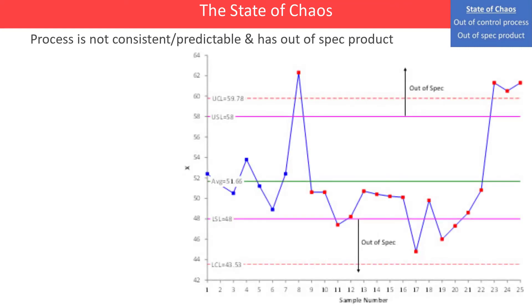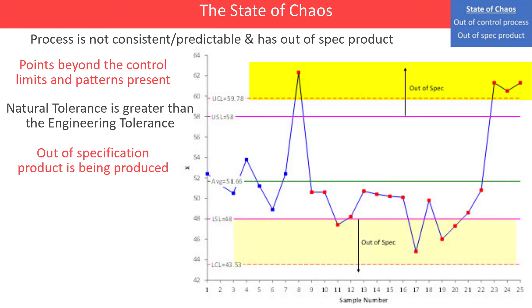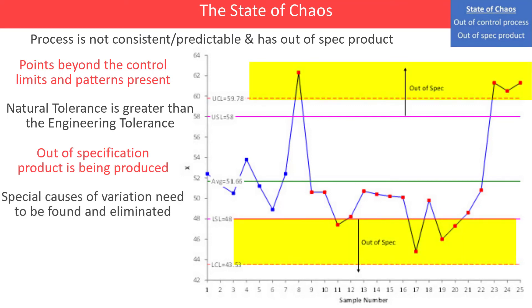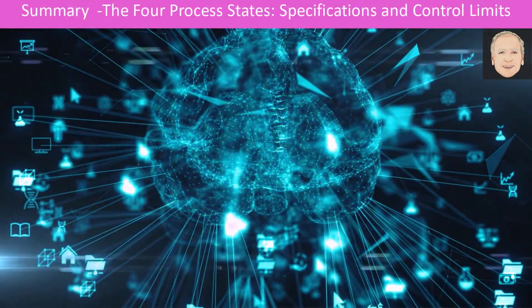In the state of chaos, it's not consistent — you're out of control and you have out-of-spec product. You see points beyond the control limits as well as patterns. The natural tolerance is greater than the engineering tolerance, and out-of-spec product is being produced. You need to find the special causes of variation and then reduce the natural tolerance. Here you have no idea what your process is going to make.